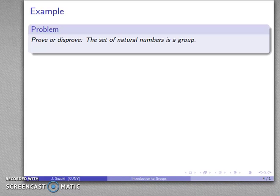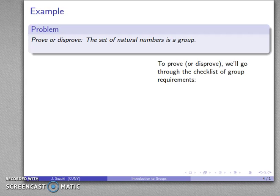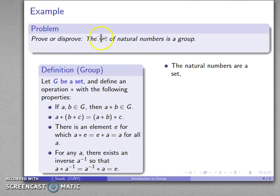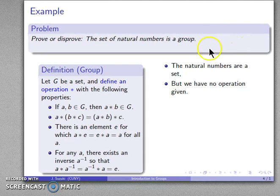Let's look at some examples. We want to prove or disprove: the set of natural numbers is a group. We put down our definition and go through the checklist. The set of natural numbers is a set — that requirement is met. However, we don't have a defined operation. Without a defined operation star, we do not have a group.